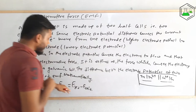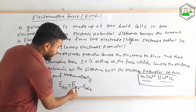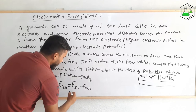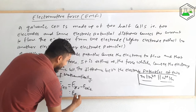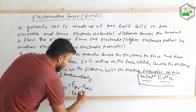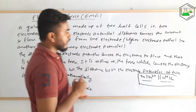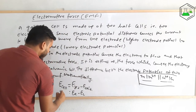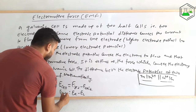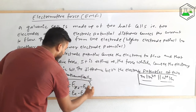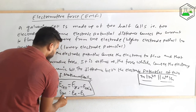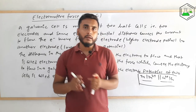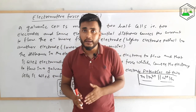From the formula, reduction comes first and oxidation second, so you can write it as E_R minus E_L, where R means the right value and L means the left value. You can use either formula — whichever you prefer — to get the overall potential of the cell.